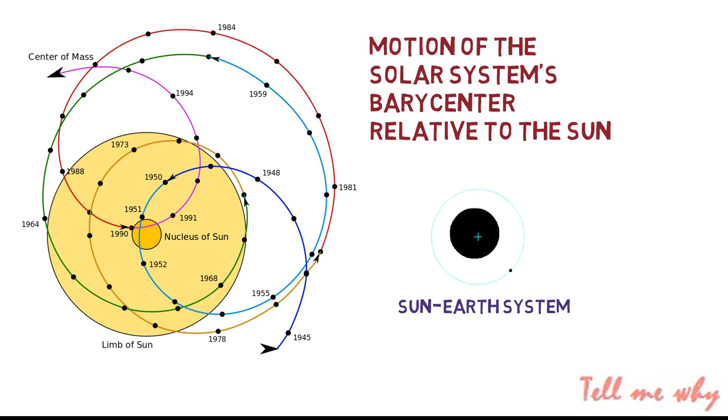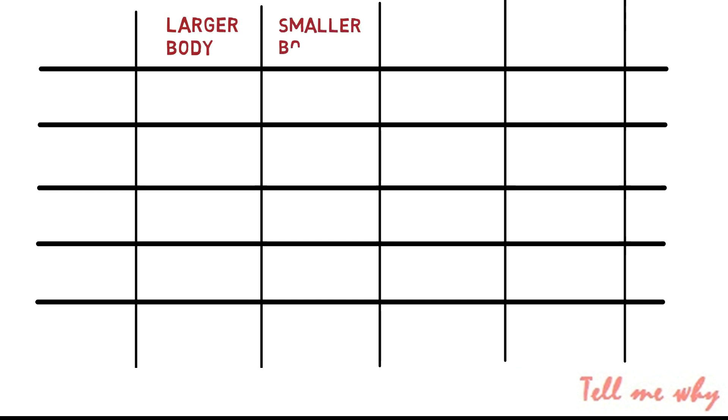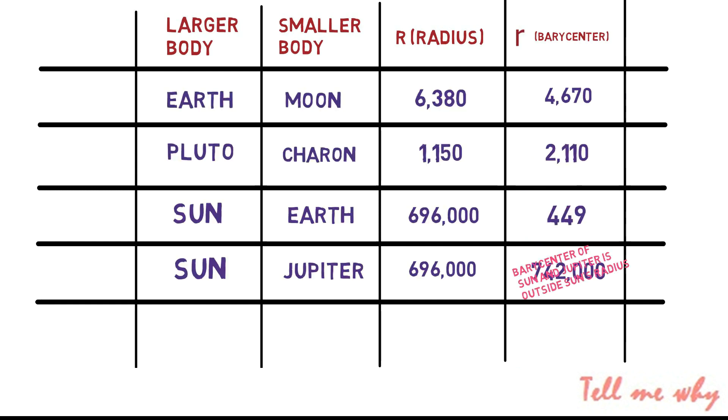This is how the sun and the earth system looks like. The following table sets out some examples from the solar system. R represents the radius of the more massive body and r represents the barycenter. In the case of sun and Jupiter, the planet's mass is so much that their barycenter lies outside of the sun.